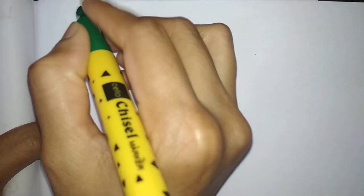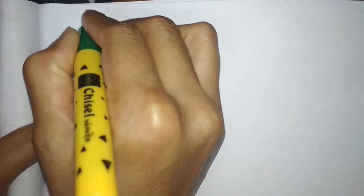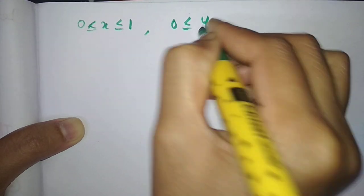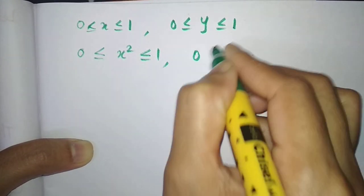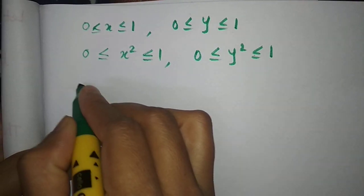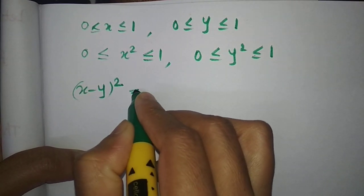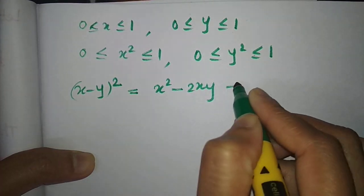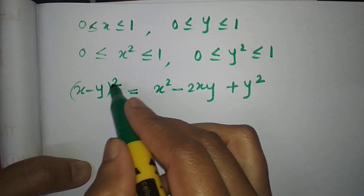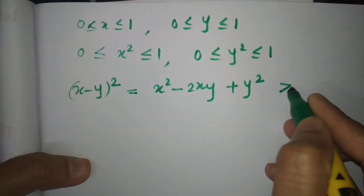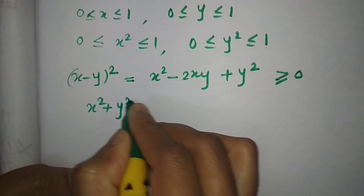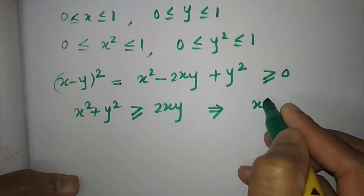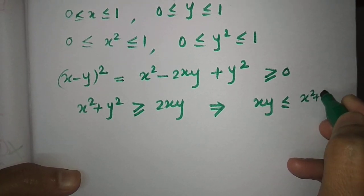Since x ∈ [0,1] and y ∈ [0,1], we have 0 ≤ x² ≤ 1 and 0 ≤ y² ≤ 1. Now consider (x−y)² = x²−2xy+y² ≥ 0, since the square of a real number is always non-negative. Rearranging gives x²+y² ≥ 2xy, which implies xy ≤ (x²+y²)/2.